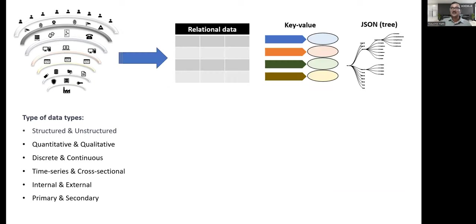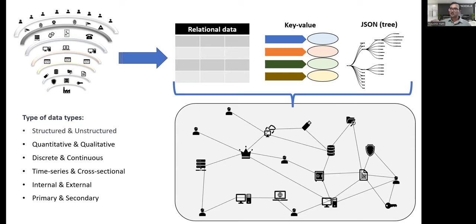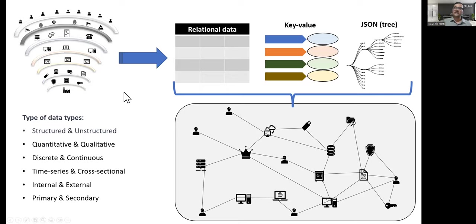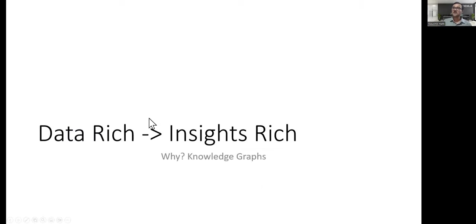All this data can be represented as relational databases like typical SQL, or key-value data, or JSON trees. Then how do you go from this kind of fragmented data to connected data? That's the key message of what a knowledge graph is — going from where data is fragmented to where everything is connected to something else. In reality, this is how the real world exists: everything is connected to something else.